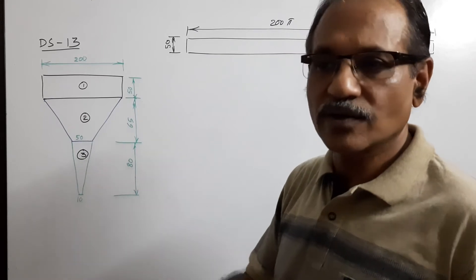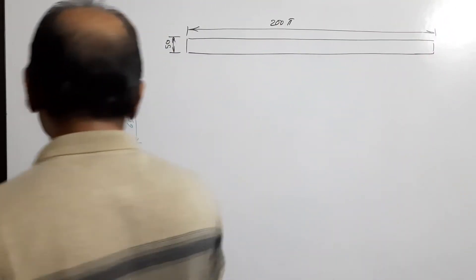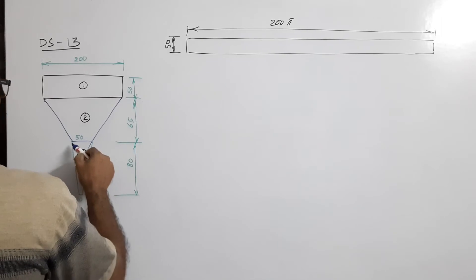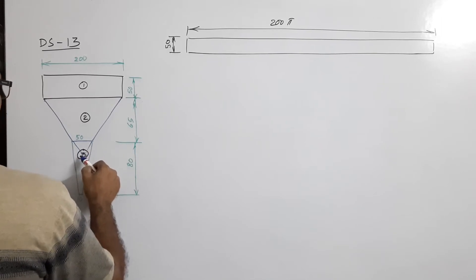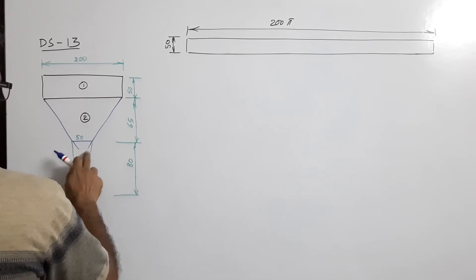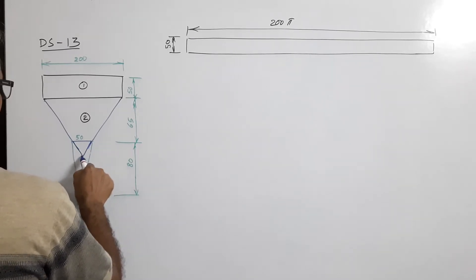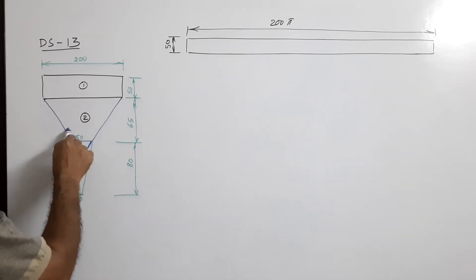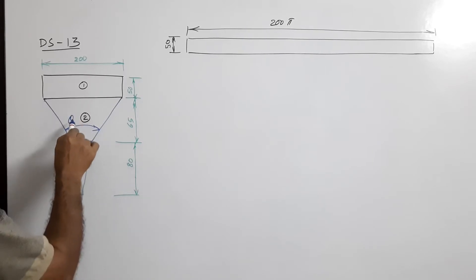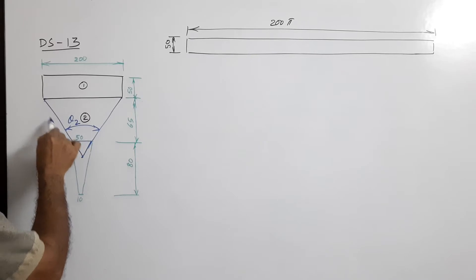The second part is a frustum of a cone. To draw its development, you find the apex by extending the slant sides until they meet. This point is the apex. The angle of the sector is called θ₂, and the radius of the arc is the slant generator length l₂.